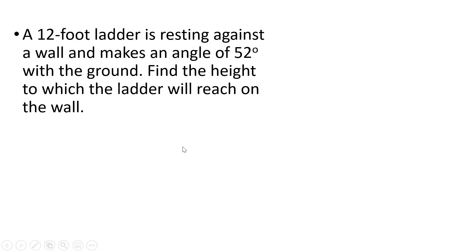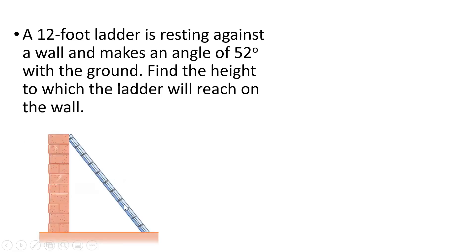The first thing we need to do is illustrate the problem. A 12-foot ladder means the length of the ladder is 12 feet. This is resting against the wall making 52 degrees with the ground, so this angle is 52 degrees. We are asked to find the height the ladder reaches on the wall, so that value is unknown.